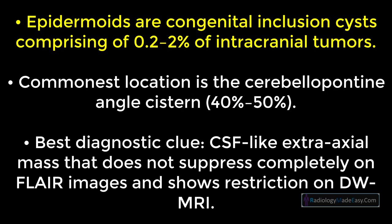In summary: epidermoids are congenital inclusion cysts comprising 0.2 to 2% of intracranial tumors. The commonest location is the cerebellopontine angle cistern. The best diagnostic clue is a CSF-like extra-axial mass that does not suppress completely on FLAIR images and shows restriction on DWI MRI.